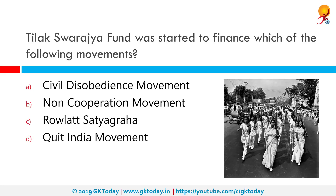The Tilak Swarajya Fund was started to finance which of the following movements? The correct answer is the Non-Cooperation Movement. The Non-Cooperation Movement was a significant phase of the Indian independence movement against British rule. It was led by Mahatma Gandhi after the Jallianwala Bagh massacre and lasted from 1920 to February 1922. It aimed to resist British rule in India through non-violence.